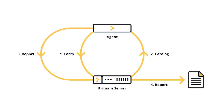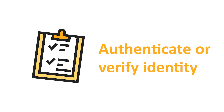Here is a simple Puppet infrastructure where agent nodes communicate directly with the primary server. The primary only provides a catalog to agents that present a valid certificate. So the certificate's main role is to authenticate, or prove, that the node is who they say they are.